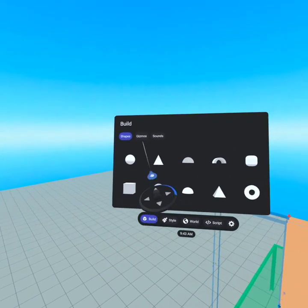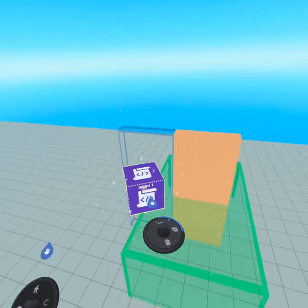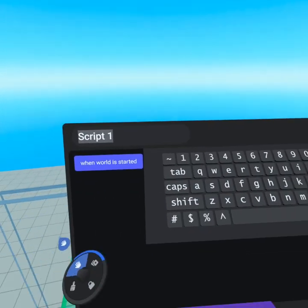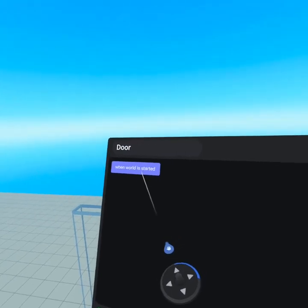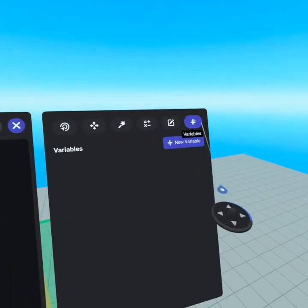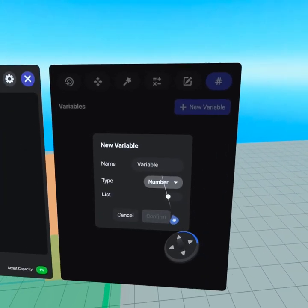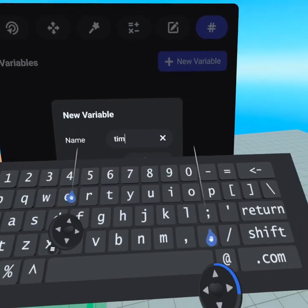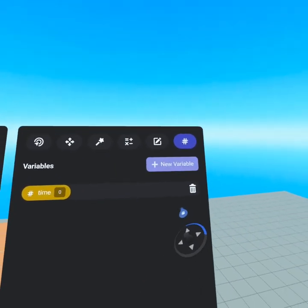Next we'll open our menu, head to our gizmos tab and pull out a script gizmo. We're gonna call this door, and when world has started we need to get a couple variables. Let's first define a number variable called time. This is how long it's going to take to open the door.